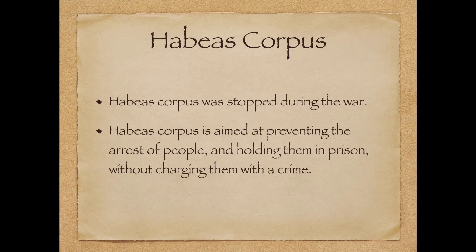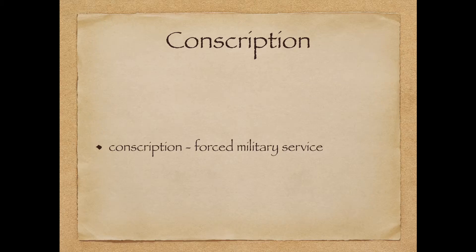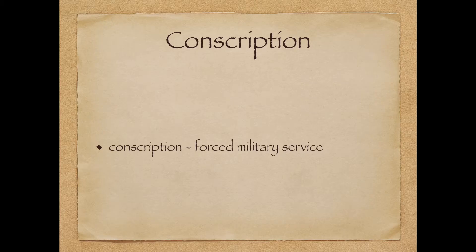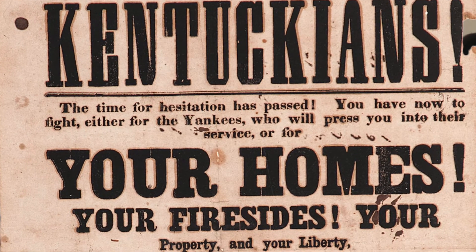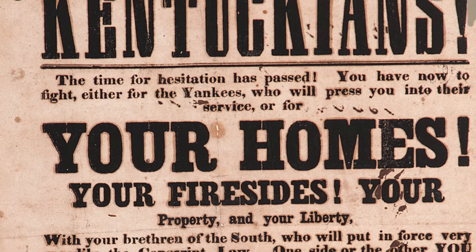Additionally, Union strategies included, eventually in the war, suspending habeas corpus, allowing for the imprisonment of a person without charging them. And also, both sides utilized something called conscription, which was forced military service, also known as drafting people into their service.